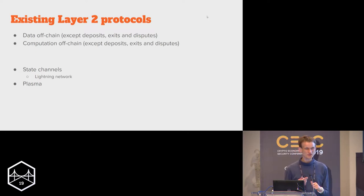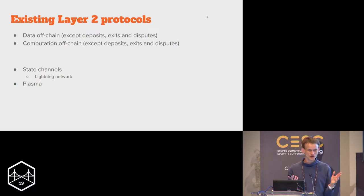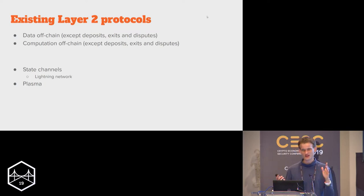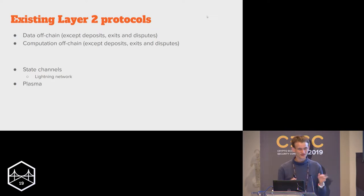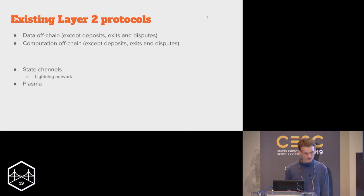So data is one of the things being off-chained by existing layer two protocols. The second thing that's being off-chained is computation. Computation includes state transitions, signature verification, hashing, zero-knowledge proof validation if you're doing privacy inside the layer two — basically any kind of computations that are part of processing transactions.